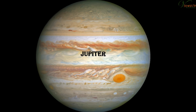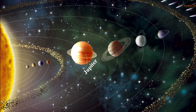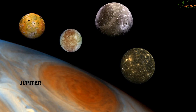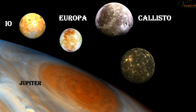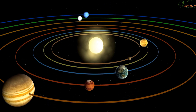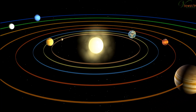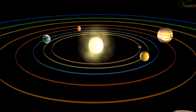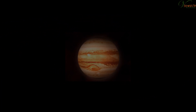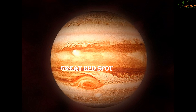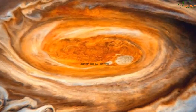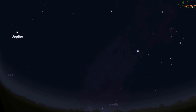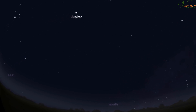Jupiter is the largest planet in the solar system. It has four large moons called Io, Europa, Callisto, and Ganymede, along with many smaller moons. It rotates the fastest among all planets. It has the famous Great Red Spot, which is a great hurricane on Jupiter. It also has faint rings around it, and can be seen in the sky easily as it appears quite bright.